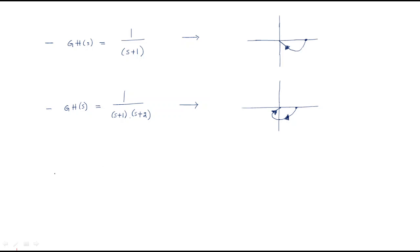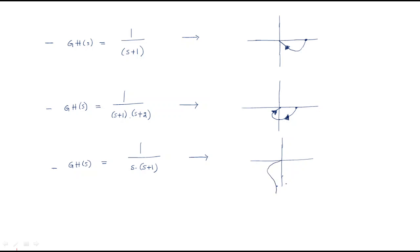The next plot we discussed is when we add a pole at the origin to the transfer function, giving us 1/(s(s+1)). The plot changes: it starts from here and ends here. This is the starting point and this is the ending point for this configuration.